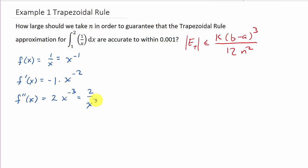Now, let's look at this. We know that x is between one and two. That's our limits on our integral, one to two. So the absolute value of f double prime of x is equal to the absolute value of two over x cubed. Now, we've got to figure out what k is. Okay? We've got to say, okay, this is less than or equal to some number.